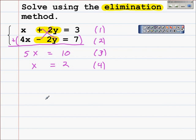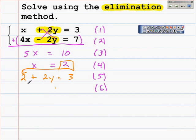That would be line 4. Now that we have one of the variables, we can take that value of x and substitute it back into one of the original equations. I'm going to substitute it into the first equation, giving me 2 plus 2y equals 3. I just substituted this 2 in for the x in the first equation. Solving this equation, subtracting 2 from each side gives us 2y equals 1. Dividing each side by 2, giving us y equals one-half.